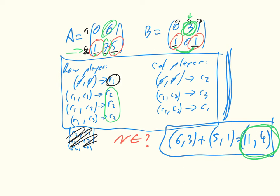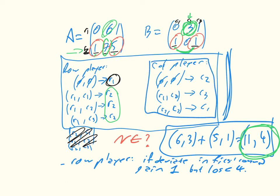Row player has no reason to deviate. So we'd go row player, and we would be able to just write down that if deviate in first round, gain 1, but lose 4. So the row player has no reason to deviate. So given that the column player is playing this, the row player has no reason to do anything else but this. And we could just see what happens if we change a variety of moves.